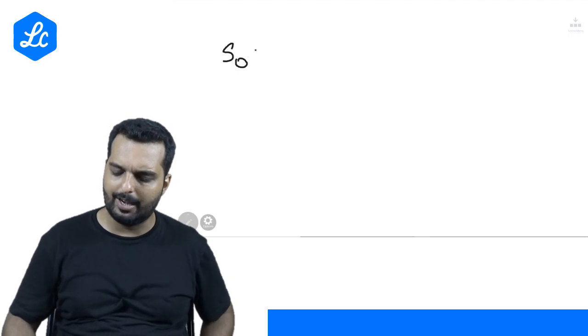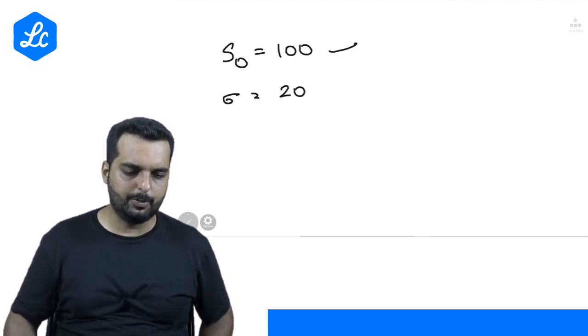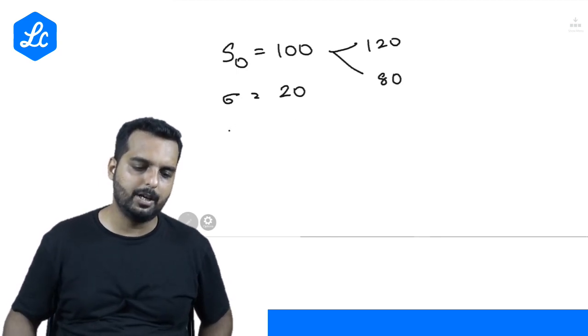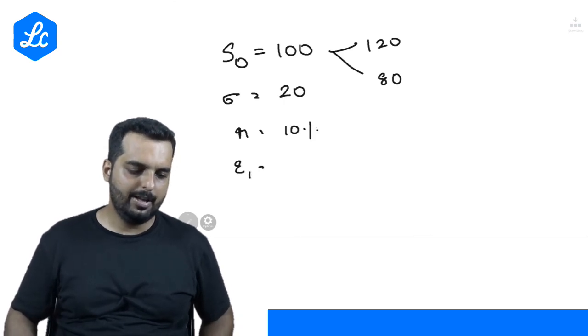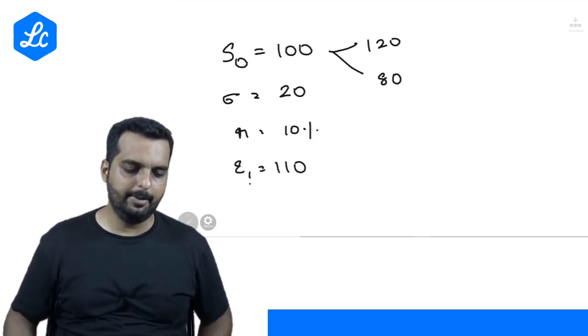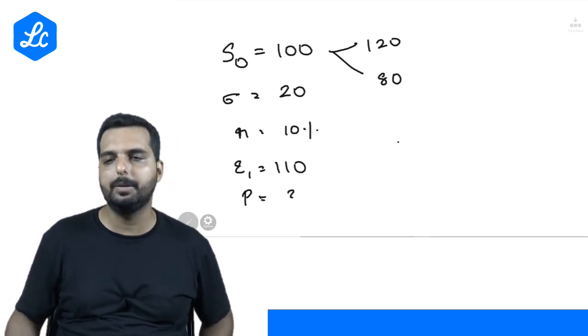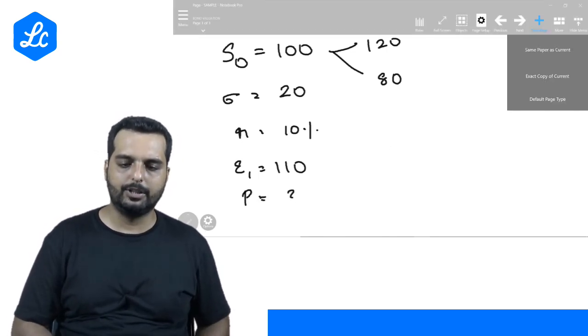I will go with the same example what we had earlier. Spot price was 100. Standard deviation was 20, which means the price could either become 120 or the price could become 80. We had RF of 10 percentage. Exercise price was 110. And this is from which we had to find out the premium. So let me take a fresh page now.